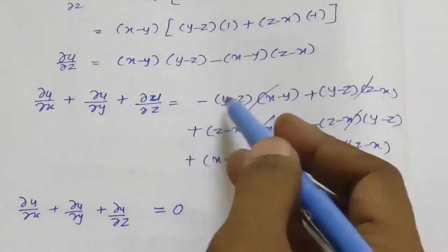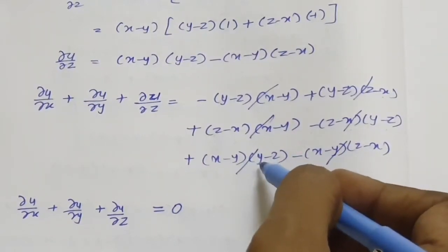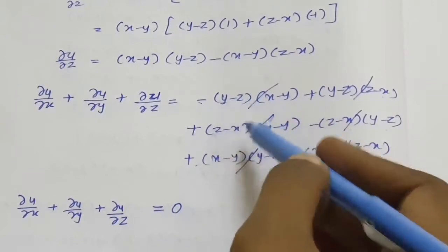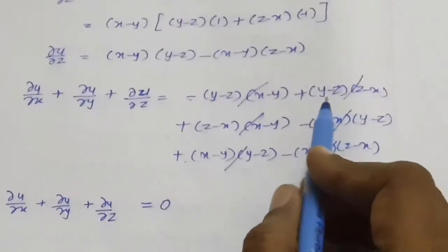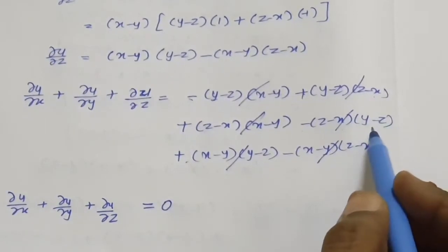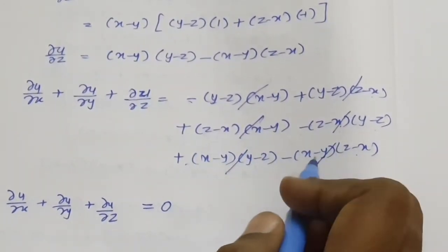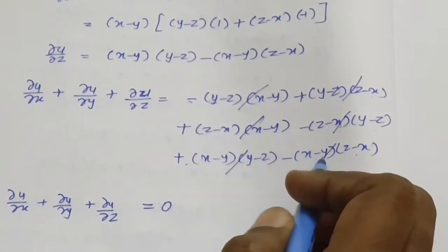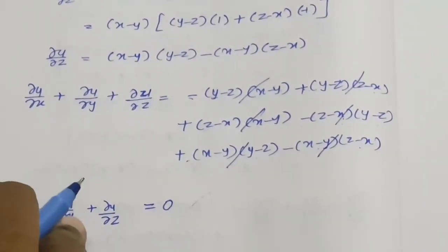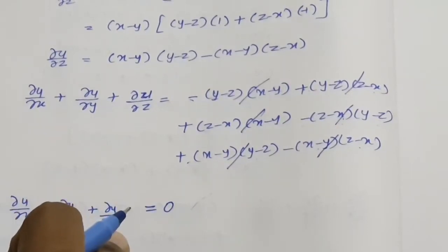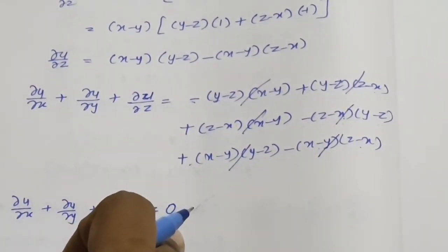When we add all three results, we can see that each pair of terms cancels: the (y minus z)(x minus y) terms cancel (one positive, one negative), the (y minus z)(z minus x) terms cancel, and the (z minus x)(x minus y) terms cancel. So the total sum equals zero. Therefore, ∂u/∂x plus ∂u/∂y plus ∂u/∂z equals 0, which is what we were asked to show.